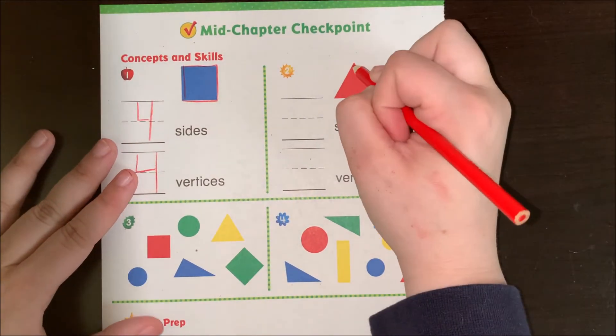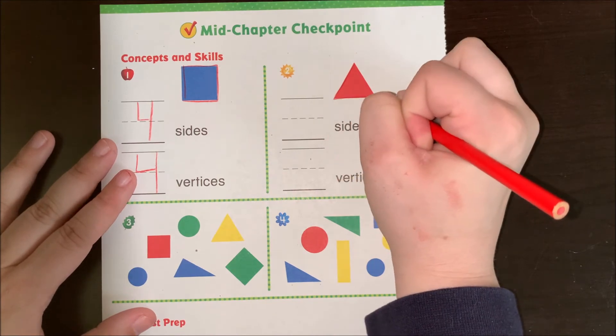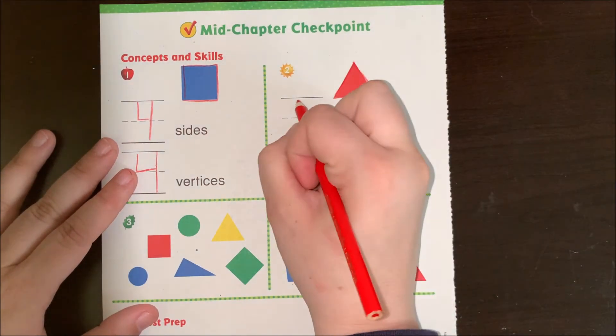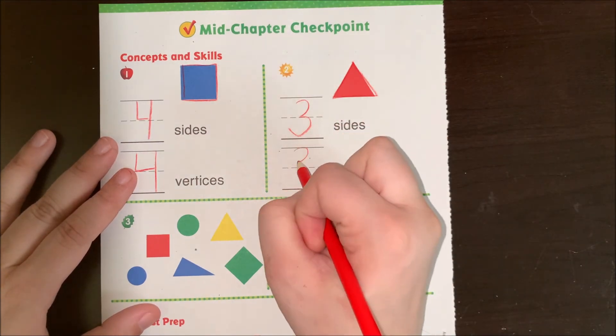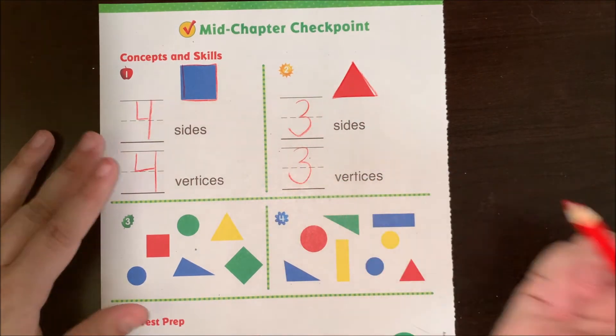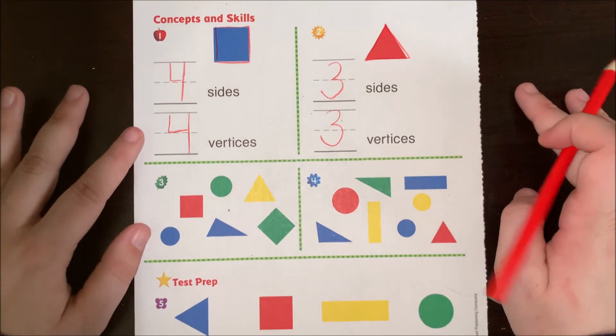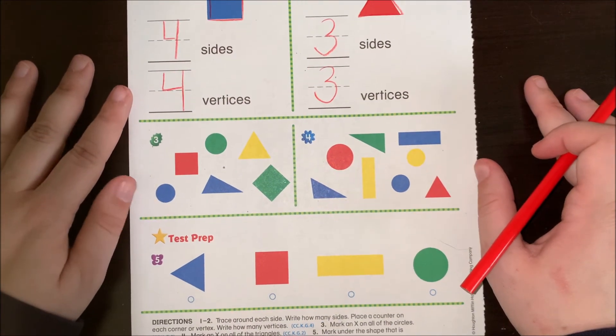Alright, how about a triangle? Let's trace it. One, two, three. Three sides. And one, two, three vertices. They're also the same. I wonder if that's a pattern that will continue as we do more shapes or not.